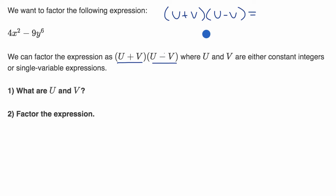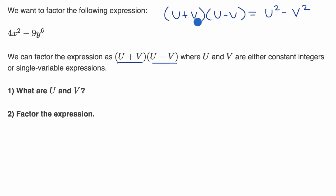If this is unfamiliar to you, I encourage you to watch the videos on difference of squares. When you multiply this all out, this is going to give you a difference of squares: u squared minus v squared. If you multiply it out, you'll see that the middle terms cancel out, so you're just left with u squared minus v squared.